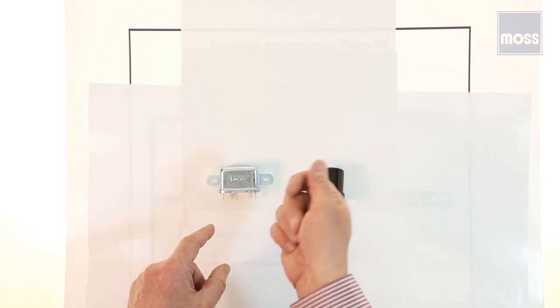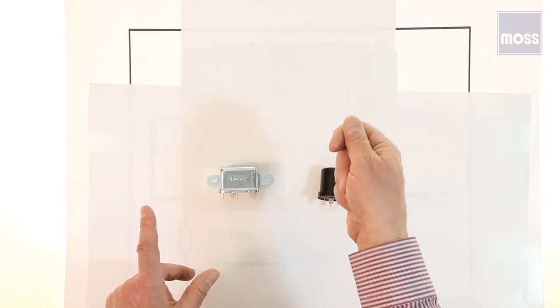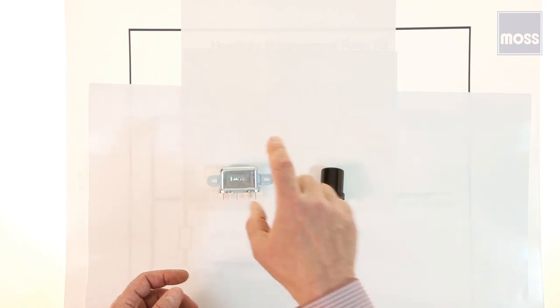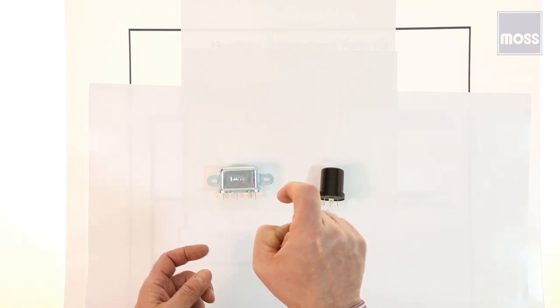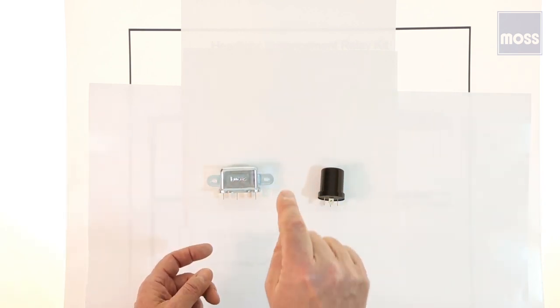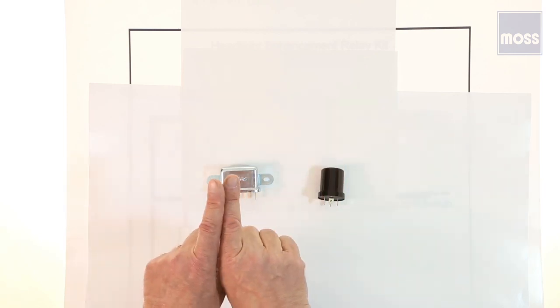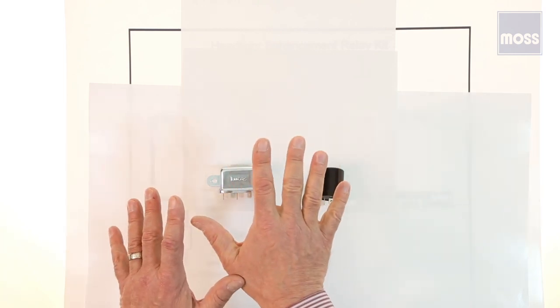In this case, I left the vacuum cleaner running so the spark happens at the plug. But if I turned the vacuum cleaner off and plugged it in, when I turned the switch on in the vacuum cleaner, the spark would be in there. There's always going to be a spark when I make or break a connection. Hold that thought for a moment.